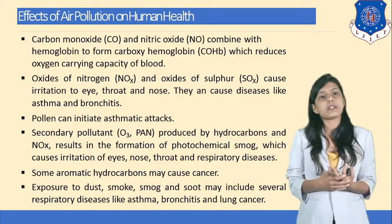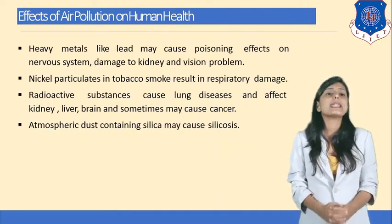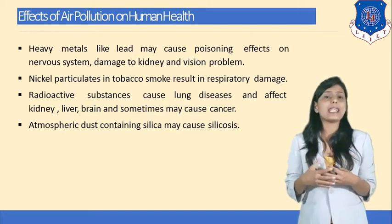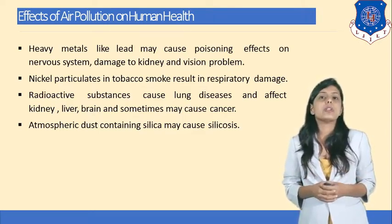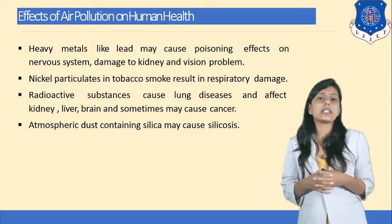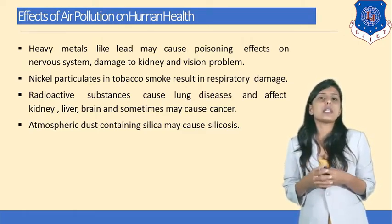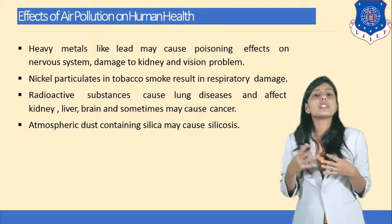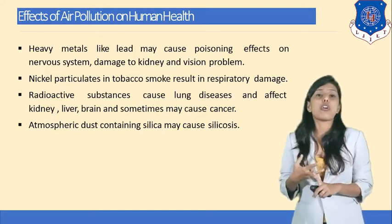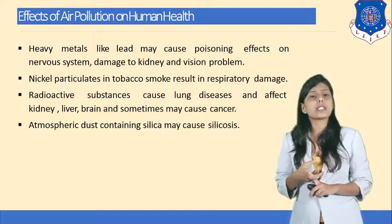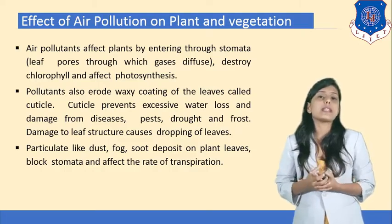The respiratory tract is majorly affected by air pollution, causing diseases like asthma and bronchitis. Heavy metals like lead may cause poisoning effects on the nervous system and damage the kidneys, causing vision problems. Nickel particulates in tobacco smoke result in respiratory damage. Radioactive substances cause lung disease and affect the kidneys, liver, and brain, and may also cause cancer. Atmospheric dust containing silica may cause silicosis. Overall, air pollution can create problems in the kidneys, vision, and cause irritation of eyes and throat, asthma, and bronchitis.